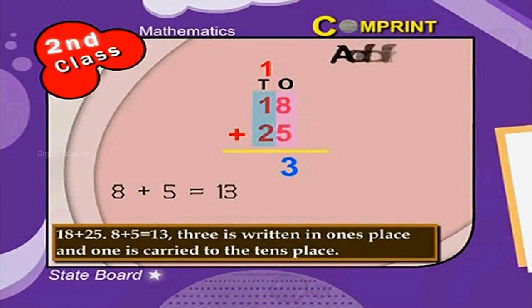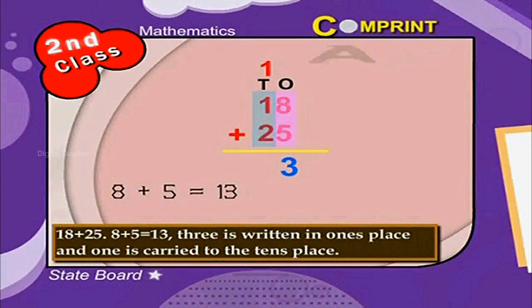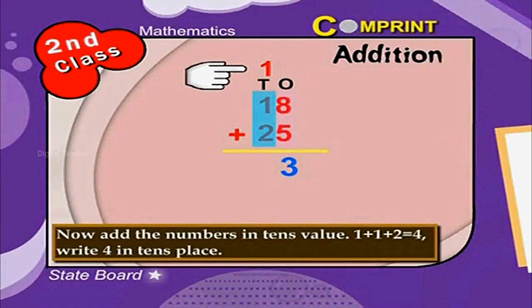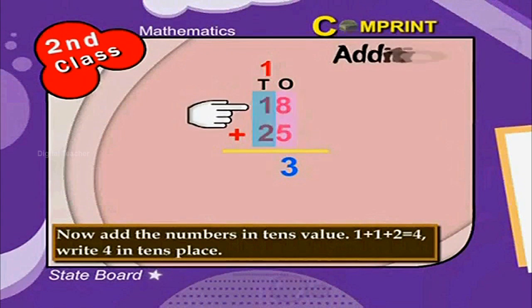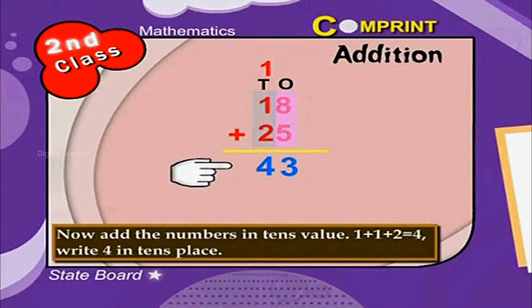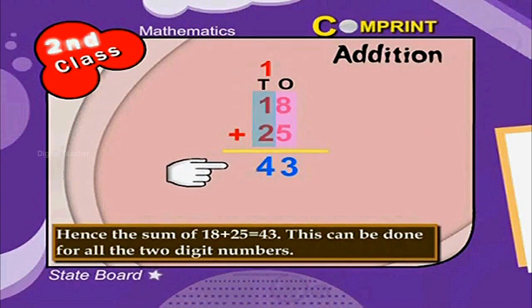Have a look at the picture: 18 plus 25. 8 plus 5 is 13. 3 is written in ones place and 1 is carried to the tens place. Now add the numbers in tens place: 1 plus 1 plus 2 is equal to 4. Write 4 in tens place. Hence, the sum of 18 plus 25 is equal to 43.